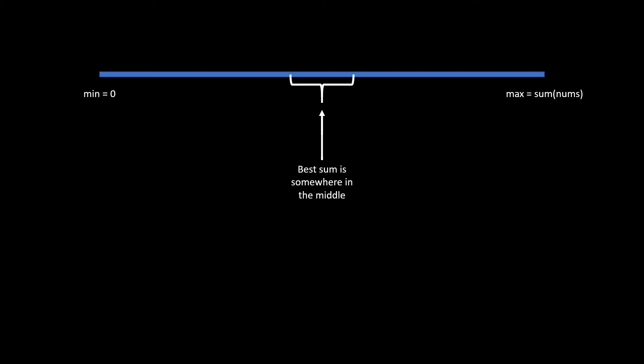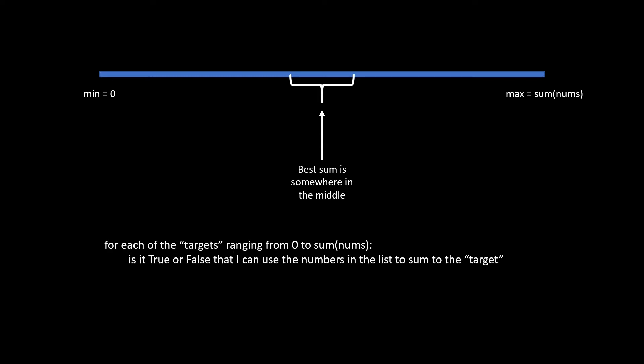Before we jump into the code let's discuss the sub-problems and how you might arrive at a dynamic programming solution. The first thing is to reword the problem. Rather than splitting the list into two groups, let's just focus on a single group. What numbers can I sum to with the various partitions of the first group? We can set a limit on possible sums: at the minimum the smallest sum is zero — no elements in group one. The maximum is the sum of the entire list. Intuitively our best arrangement is somewhere in the middle — where group one's sum is close to exactly half of the total.